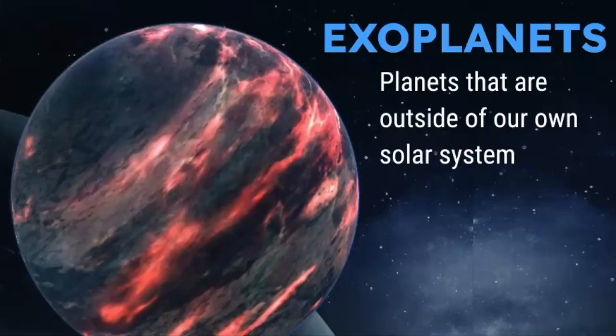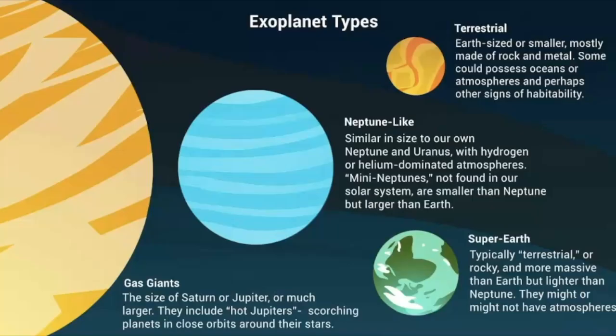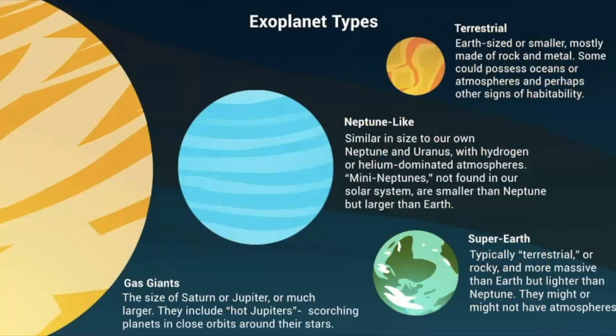In January of 2022, when this was recorded, scientists have discovered 4,903 confirmed planets outside of our own solar system. Many of these star systems have more than one planet. Astronomers have created a group of exoplanet types that include Earth-size and terrestrial, or super-Earths, Neptune-like, and gas giants.